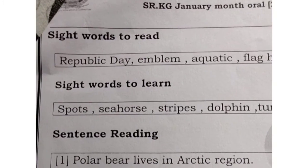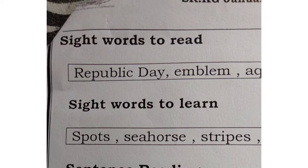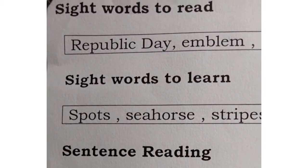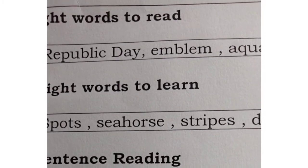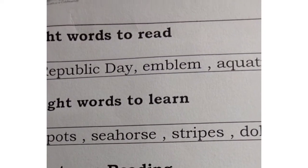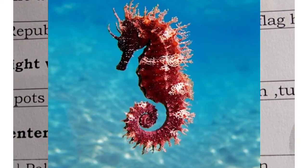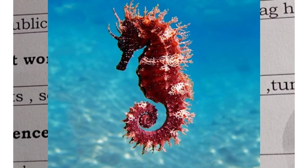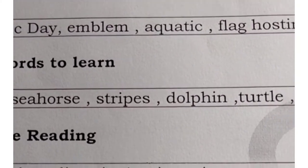Now come on to the next section: sight words to learn. Spots — spot means any spots or markings. Seahorse. S-E-A-H-O-R-S-E. Seahorse is also an aquatic animal. As you can see in the image, they don't have very big fins, but they can still swim very fast.